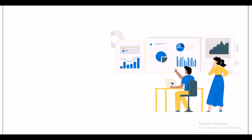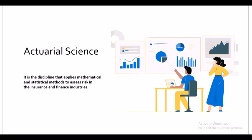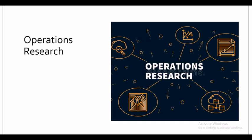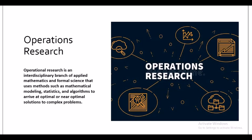Actuarial science is the discipline that applies mathematical and statistical methods to assess risk in the insurance and finance industries. Operations research is an interdisciplinary branch of applied mathematics and formal science that uses methods such as mathematical modeling, statistics, and algorithms to arrive at optimal or near-optimal solutions to complex problems.